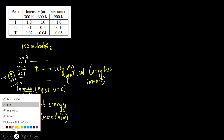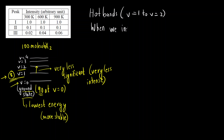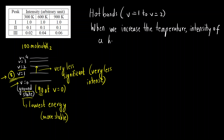Now, what is the concept of hot bands? Hot bands are the vibrational transitions from V=1 to V=2. When can we see hot bands? How to identify hot bands? When we increase the temperature — when we heat the sample — the intensity of a hot band increases.